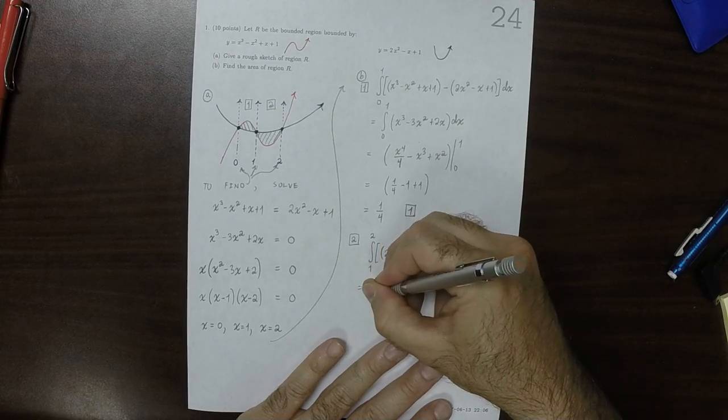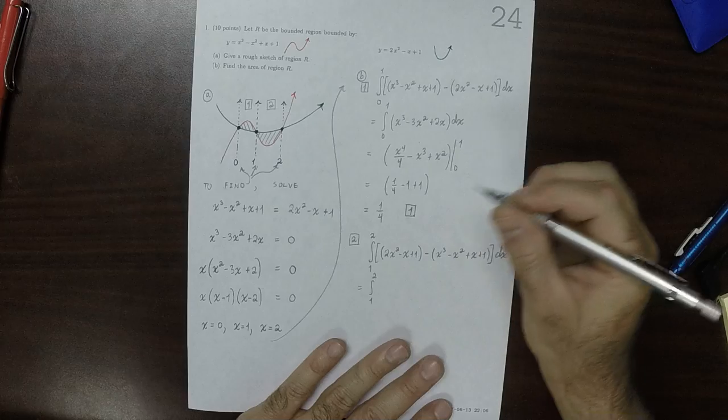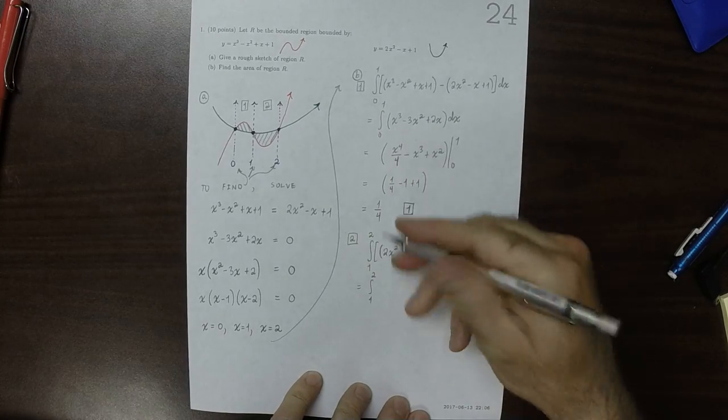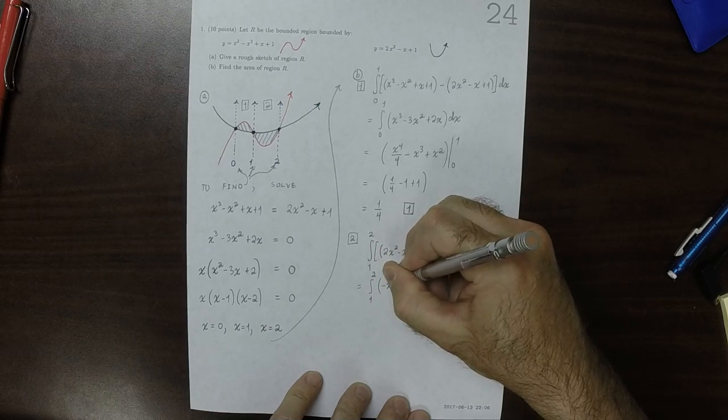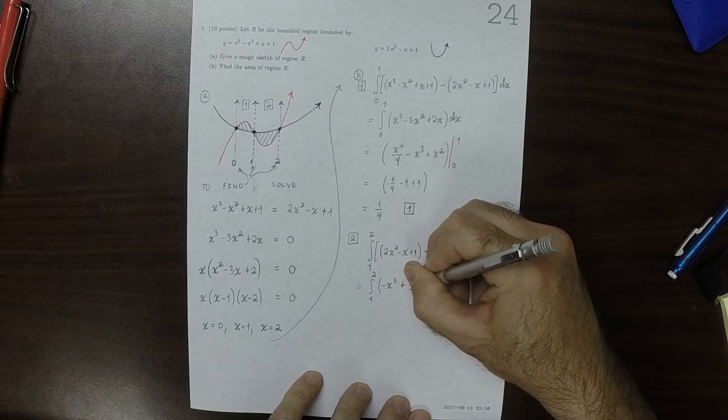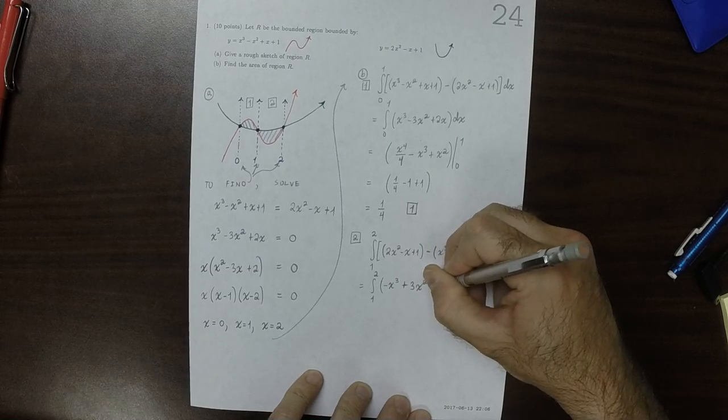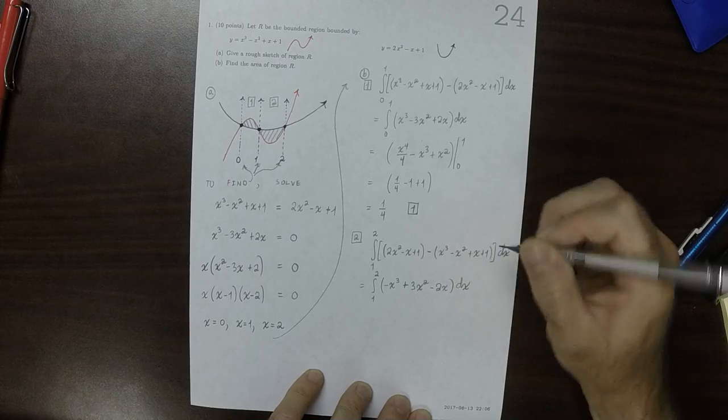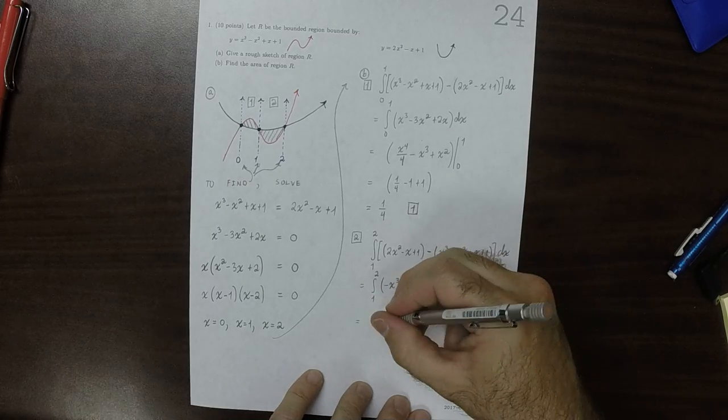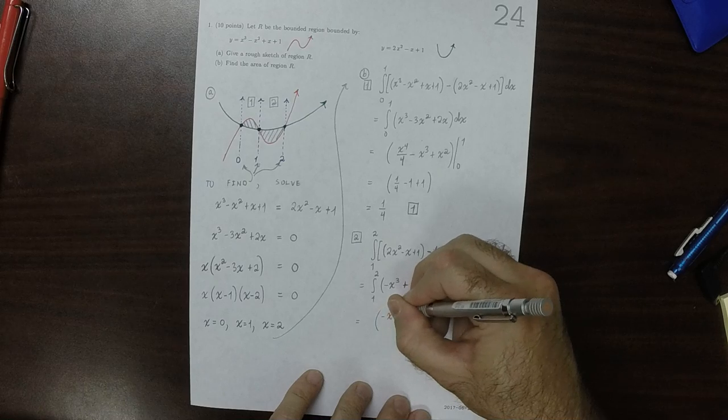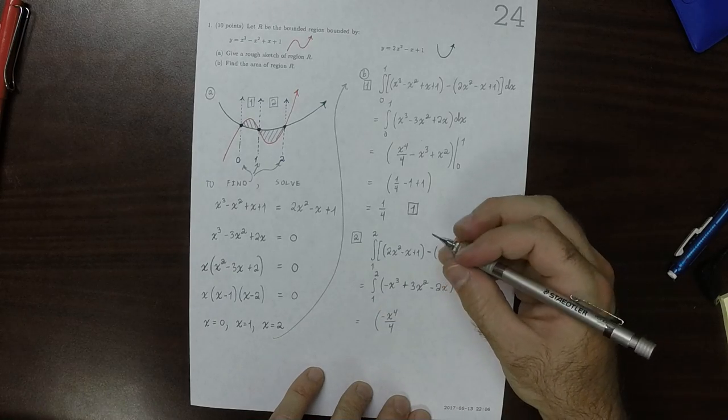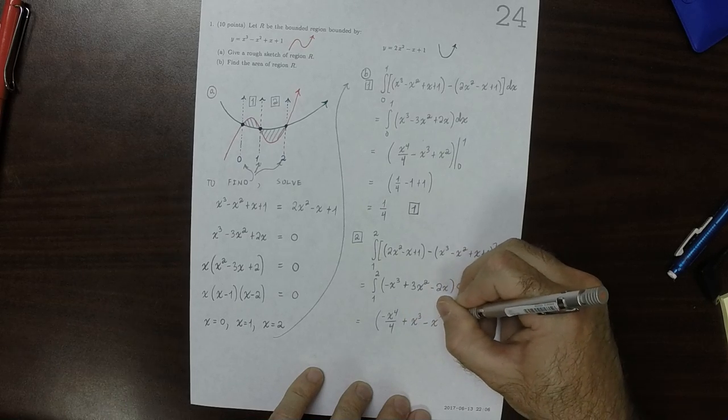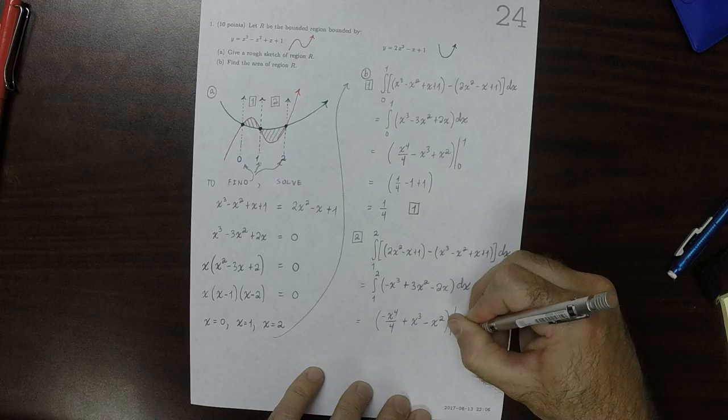And if you simplify that, that's the integral from 1 to 2, and it will be, all of these terms will be negated, so that'll be negative x cubed plus 3x squared minus 2x dx. So now find the antiderivative of that. That will be negative x to the 4 over 4, and then plus x cubed and then minus x squared from 1 to 2.